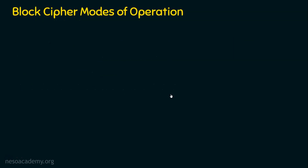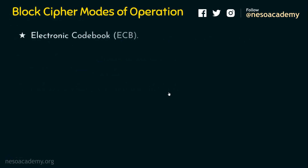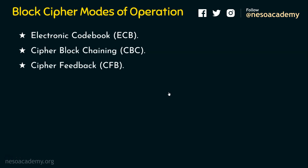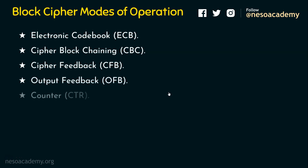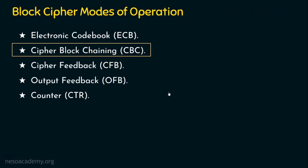There are basically five modes of operations in block cipher: number one, the electronic code book ECB; number two, the cipher block chaining CBC; number three, the cipher feedback mode CFB; number four, the output feedback mode OFB; and number five, the counter mode. We are now focusing on the second mode of operation, the cipher block chaining.